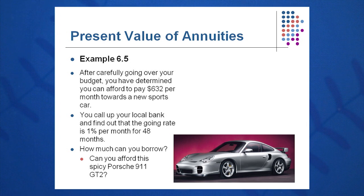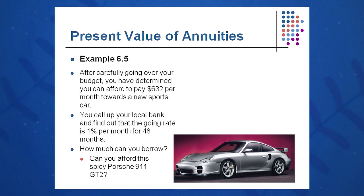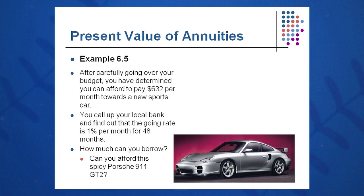Let's look at some examples of annuities. I'm going to rename this the present value annuity formula — maybe we'll call it the mortgage formula, the bank loan formula, the car loan formula, the credit card formula, the student loan formula. We can use this equation for calculations very important to us in our personal life. You want to go buy a sports car. This sports car will cost you $632 per month. You call up your local bank and they want 1% per month for 48 months. Can you afford this Porsche 911 or a BMW M-Series? Mercedes-Benz — is that what you're going to get for your money?